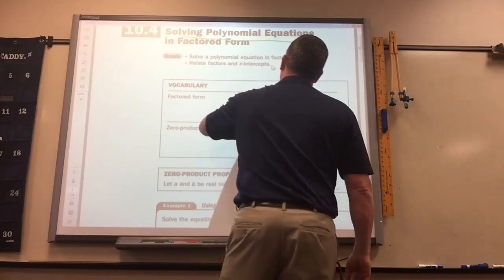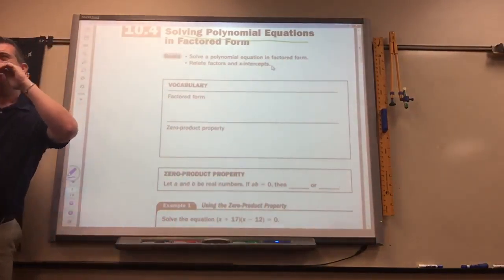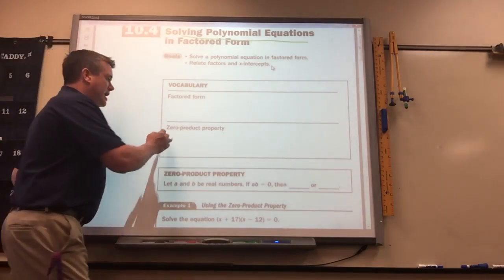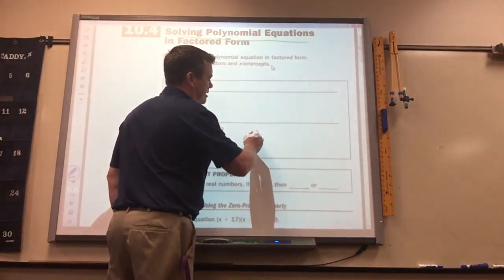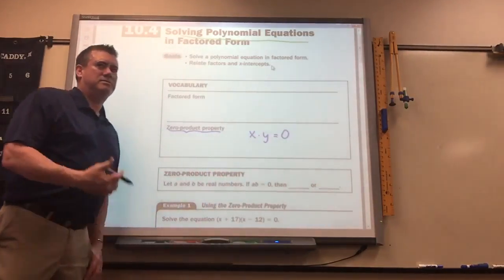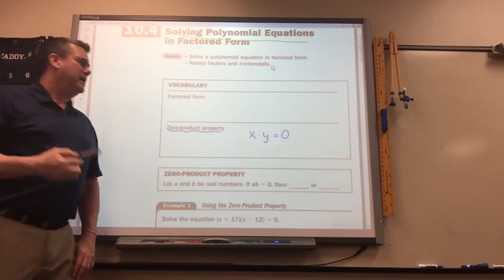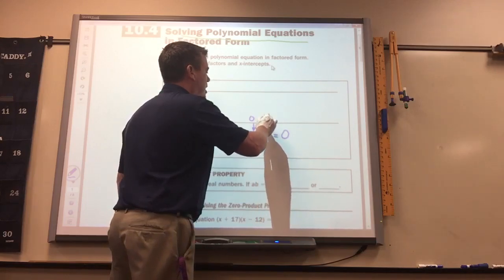Now, this first stuff is already set up for you. It's just you get an idea of how to solve them. And you need to know the zero product property, which you already know. You just probably don't know what's called that. If you multiply x times y, and the answer is zero, what do you know? One of them has to be a zero. Either x has to be zero, or y has to be zero.